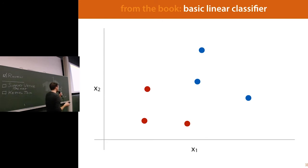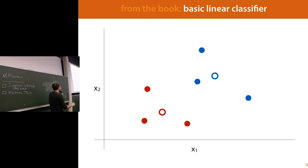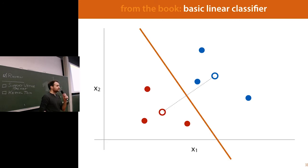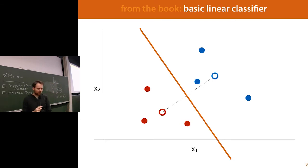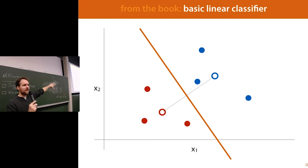One more thing to mention to align with the book: Peter Flack talks about something he calls a basic linear classifier. What it does is find the mean point for each class, draw a line between the two mean points, and then draw a perpendicular line halfway down. It uses this as its classification boundary. It's a very simple way to operate, and Peter Flack uses it not as a very practical classifier but as a stepping stone to build on toward other classifiers.